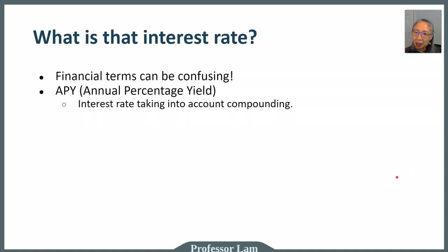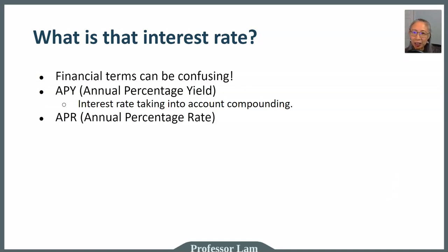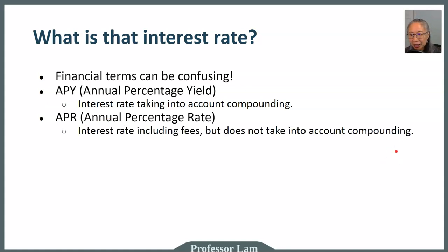We will talk about compounding in a minute. The next very common term is APR, which stands for annual percentage rate. The annual percentage rate includes fees but does not take into account compounding. Annual percentage yield takes into account compounding but oftentimes does not take into account fees.